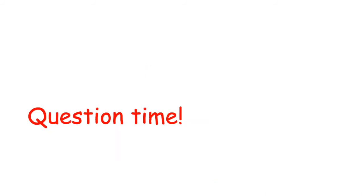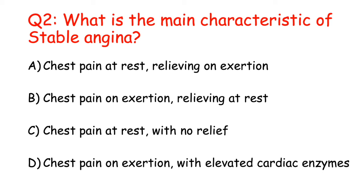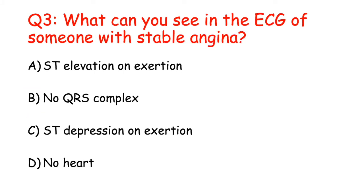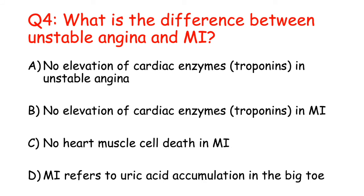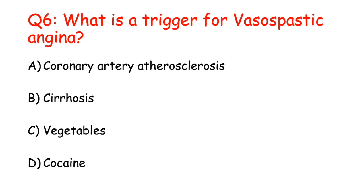Here are some review questions: What is the definition of angina? What is the main characteristic of stable angina? What can be seen on the ECG of someone with stable angina? What is the difference between unstable angina and myocardial infarction? What can be seen on the ECG of someone with vasospastic angina? And what are the triggers for vasospastic angina?